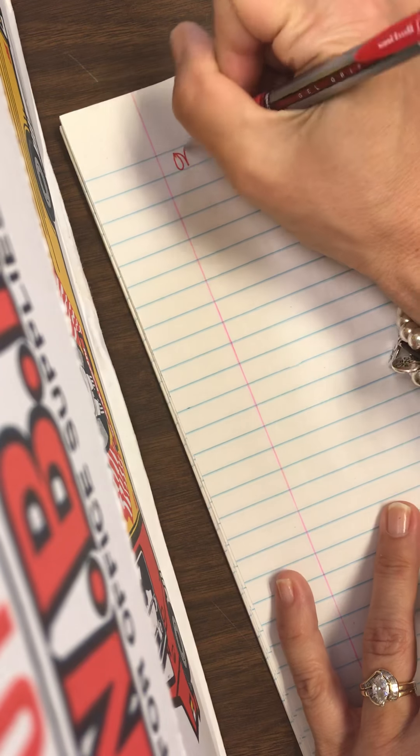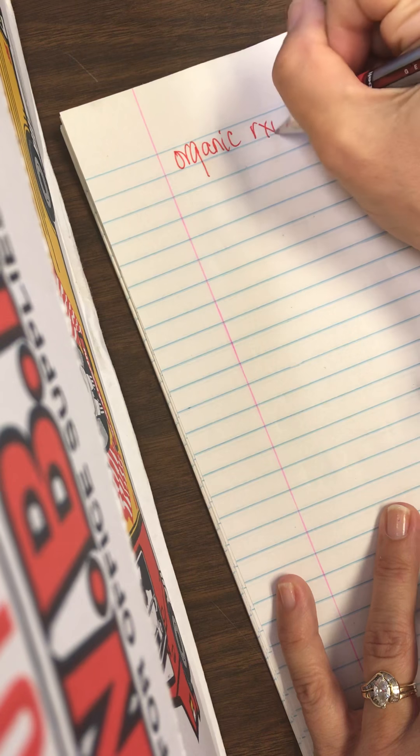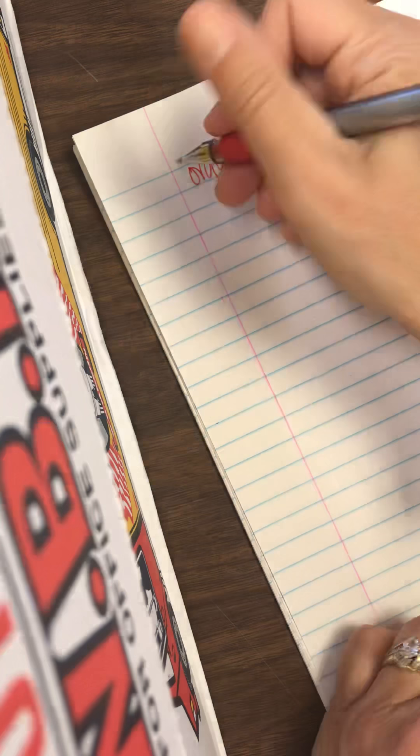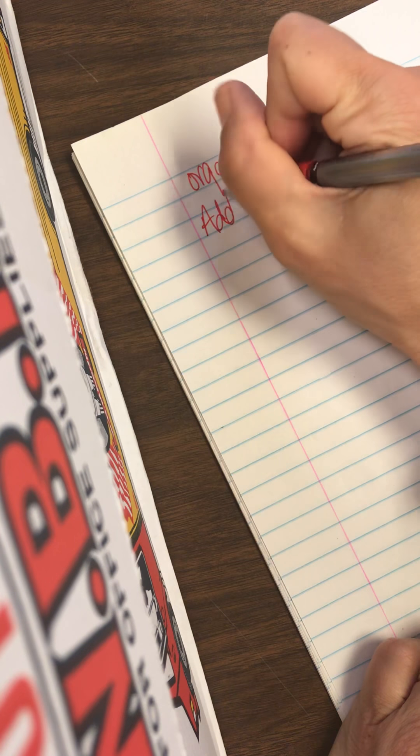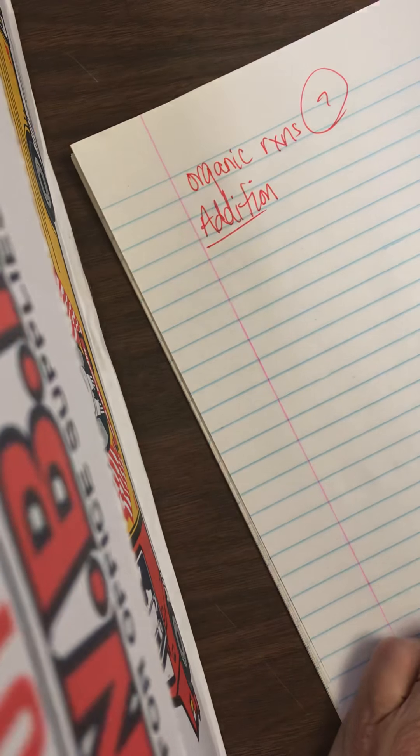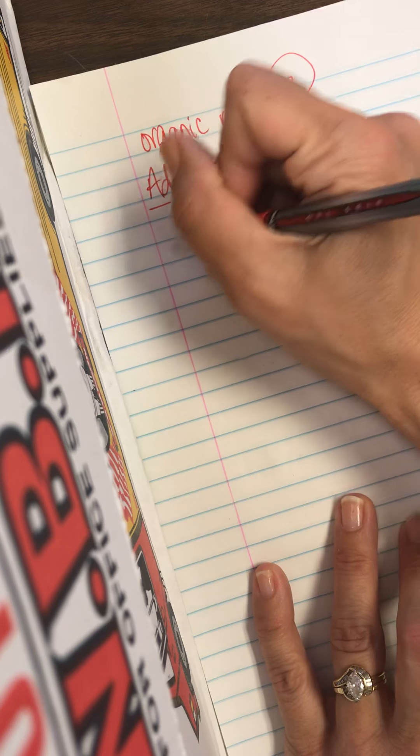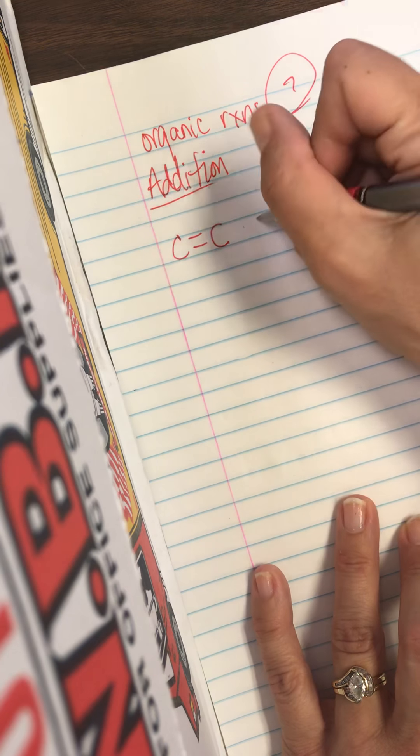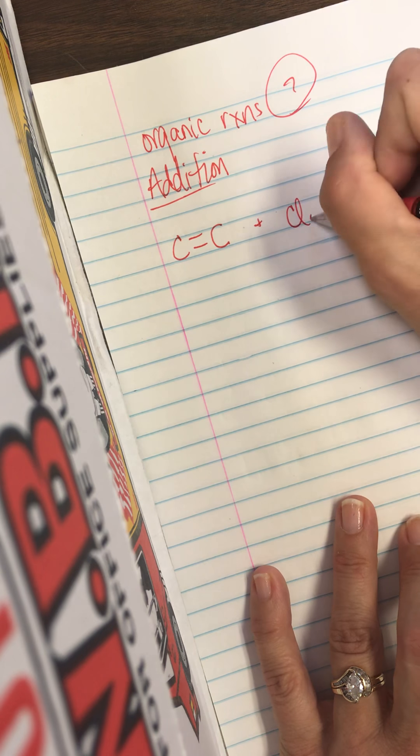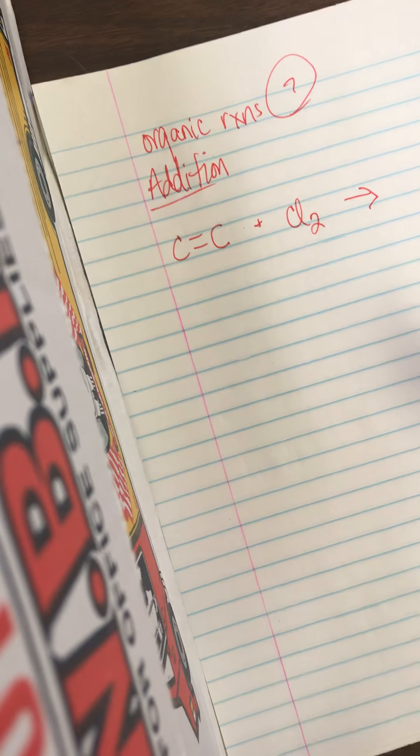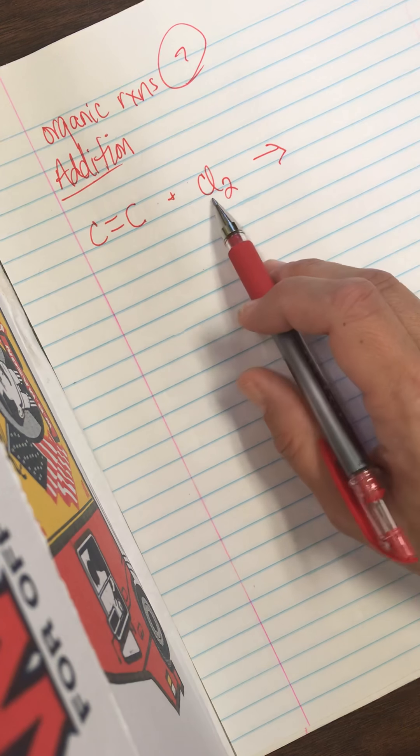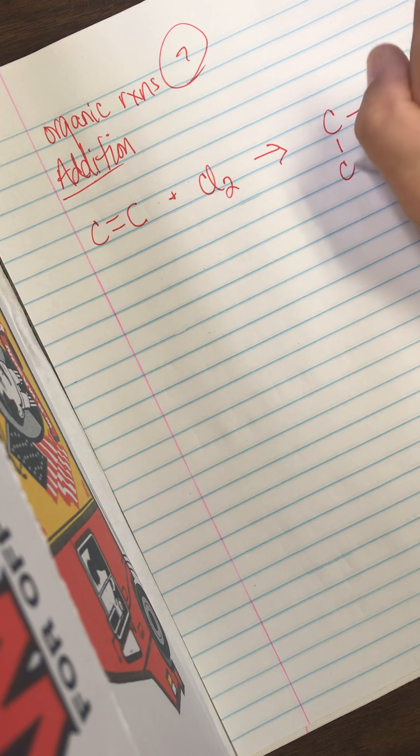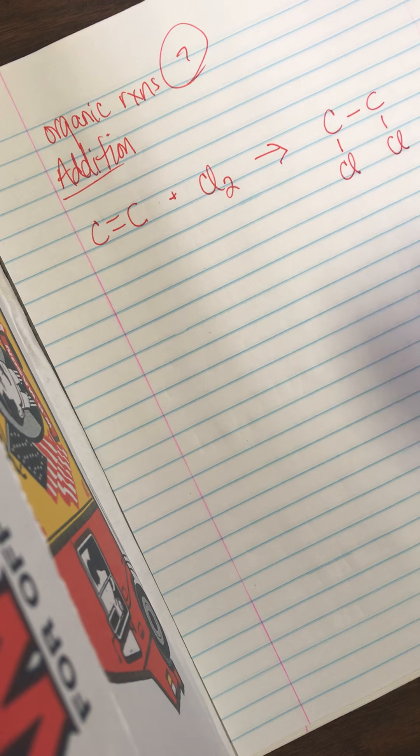Next thing I want to talk about are organic reactions. And there are seven different organic reactions. So let's start off with addition. Addition obviously sounds like you're adding things together. So you are going to take two molecules. One has to be unsaturated. And the other one can be hydrogen or like chlorine, something like that. And you break this double bond and you add them together. So I'm going to break it and put a single bond there. I'm going to add one of the chlorines here and one of the chlorines here.